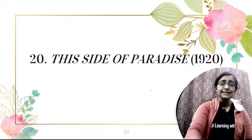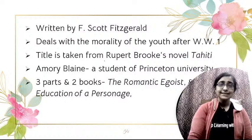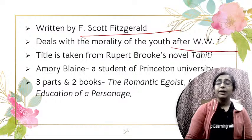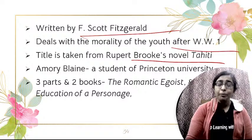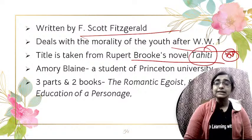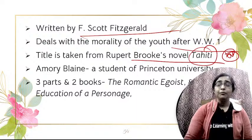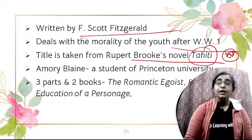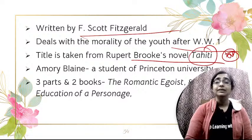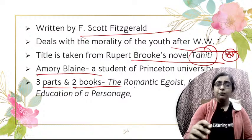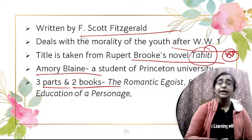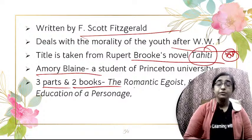The last novel of today's class is This Side of Paradise, published in 1920, the debut novel of F. Scott Fitzgerald. It has a First World War backdrop and deals with the morality of youth during the war. The title is taken from war poet Rupert Brooke's poem 'Tiare Tahiti.' The main character is Amory Blaine. The novel is divided into two books: The Romantic Egoist and The Education of a Personage.